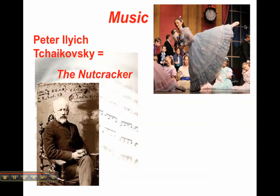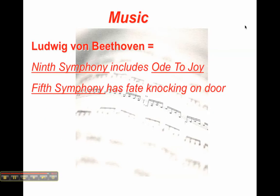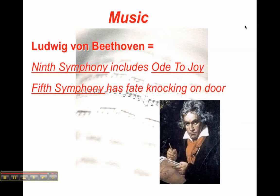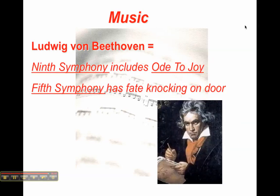Romantic composers include Tchaikovsky, who you should be familiar with through his famous work The Nutcracker. The other really famous musician you should be familiar with is Beethoven. He's appealing to emotions — either joy or foreboding, depending on which symphony. I will play some of this music for you tomorrow.